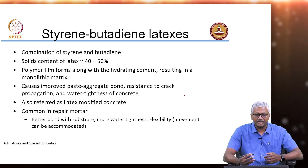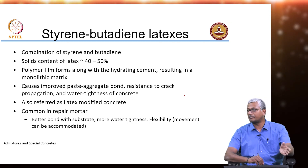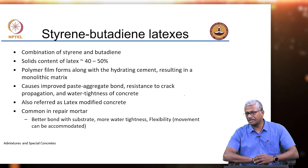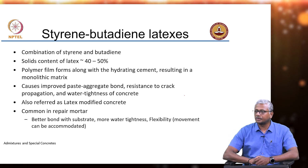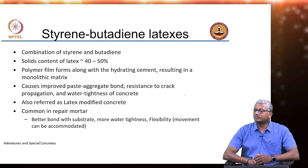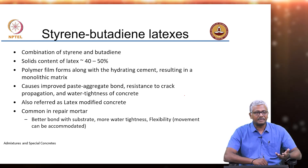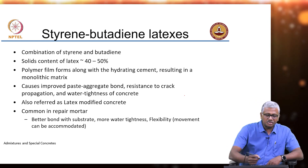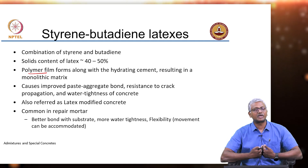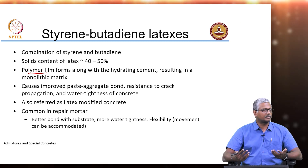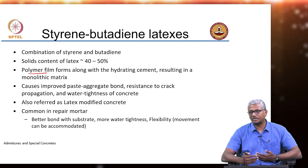Styrene butadiene latex has a solids content of about 40 to 50 percent, meaning the remaining part is water — they are basically emulsions of styrene butadiene molecules in water. These are added along with the concrete, and the monomeric styrene butadiene essentially forms a polymeric film. As the cement is hydrating, you also have this polymerization of the rubber that leads to the formation of a polymer film along with the hydrated cement products.